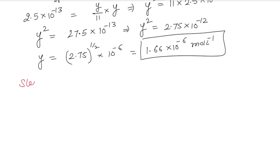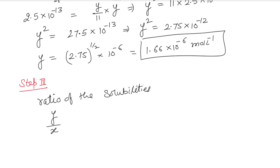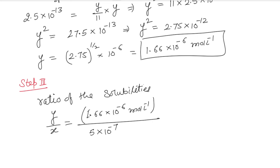Step 3 is the ratio of the solubilities, that is y/x. We have y = 1.66×10⁻⁶ mol/L and x = 5×10⁻⁷ mol/L. So the ratio comes out to be 1.66×10⁻⁶ / 5×10⁻⁷ = 3.32. Therefore silver benzoate is 3.32 times more soluble in the buffer solution than in pure water.